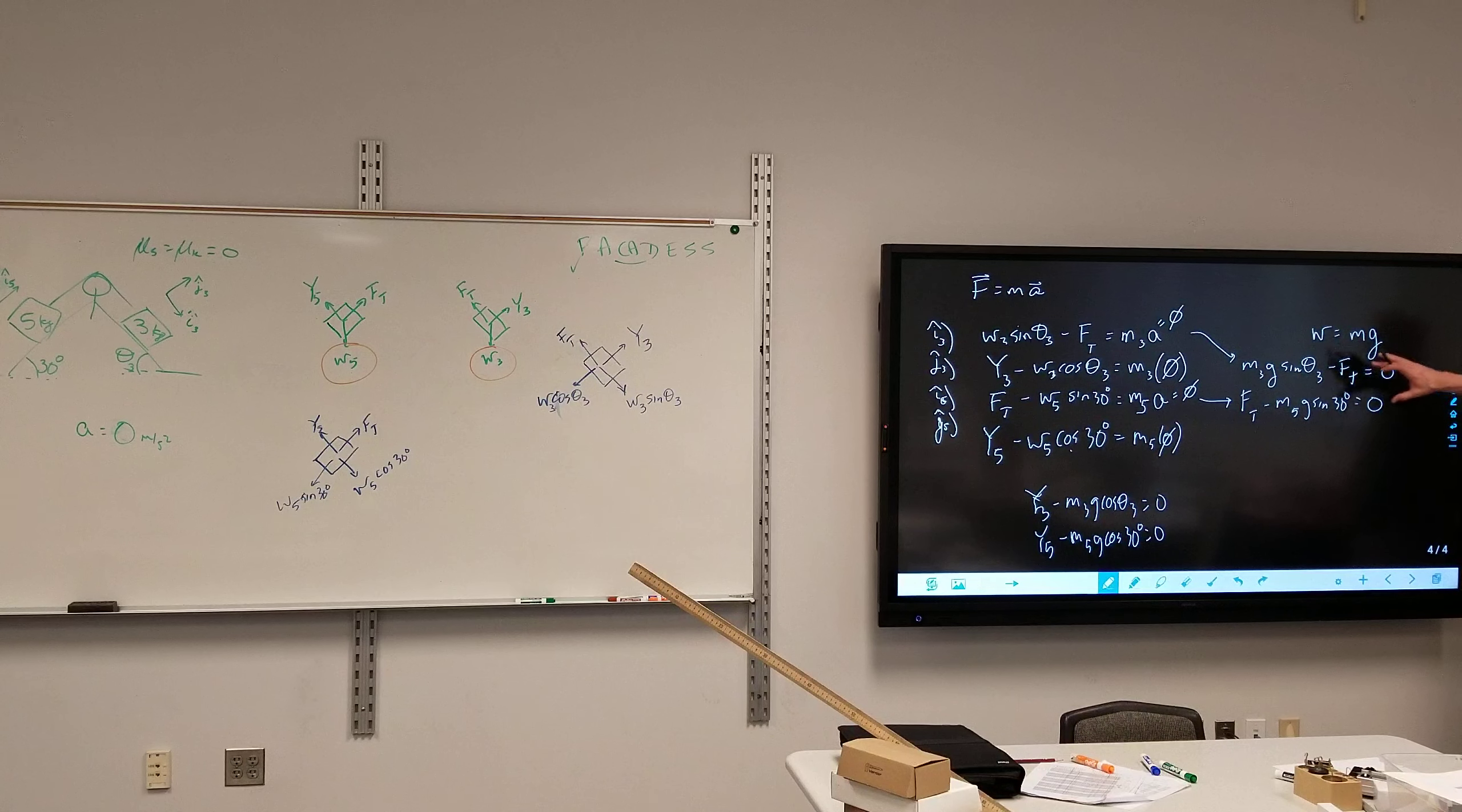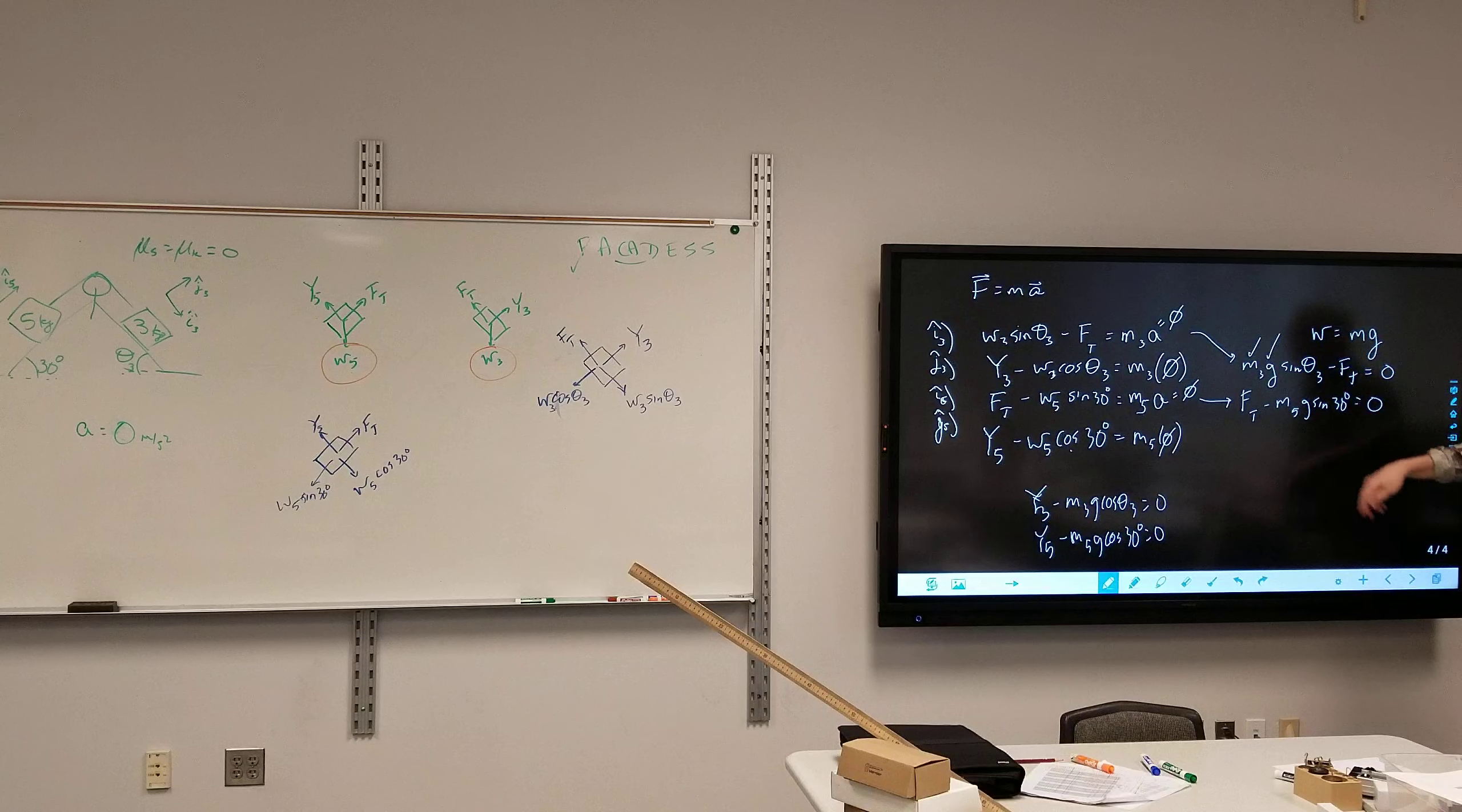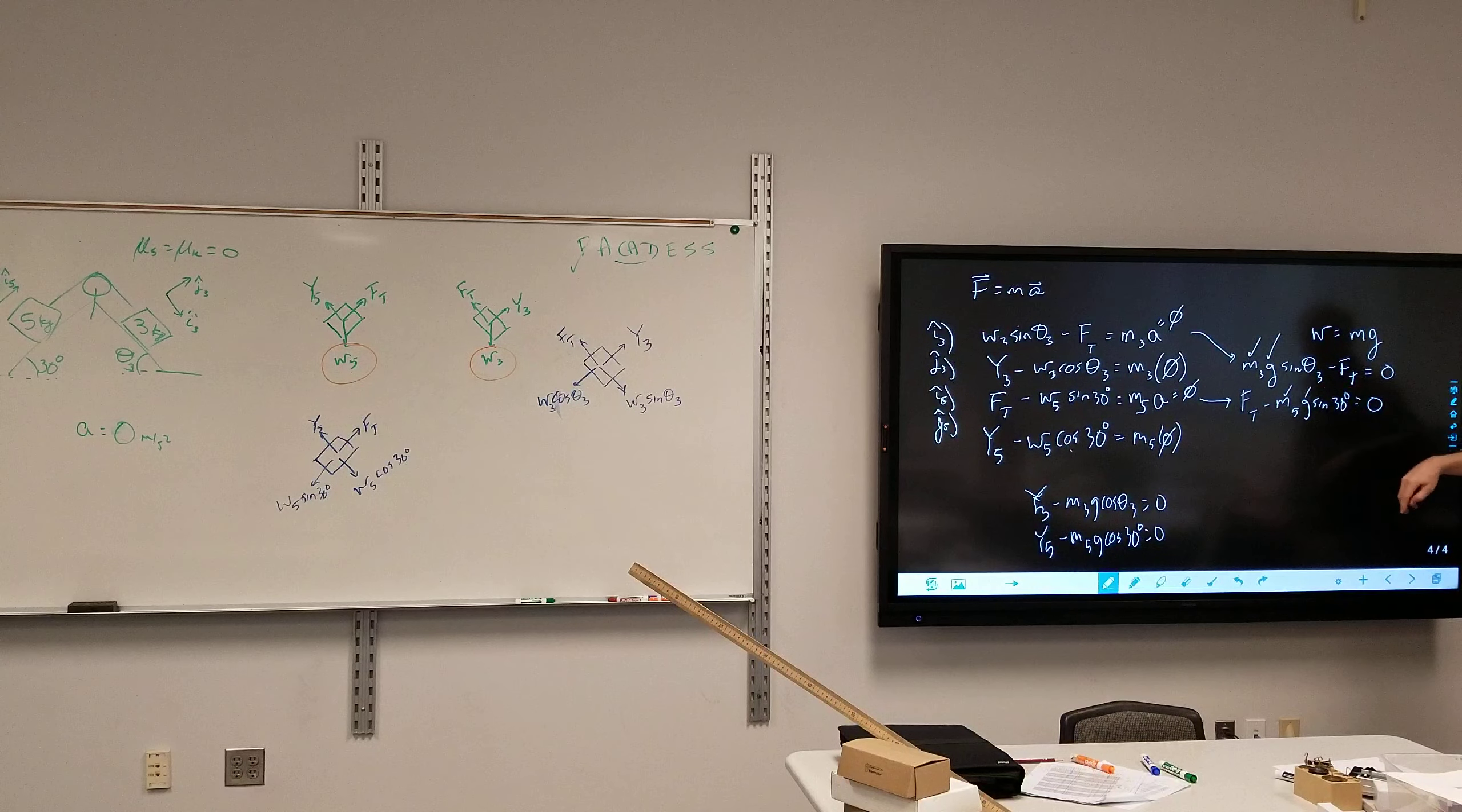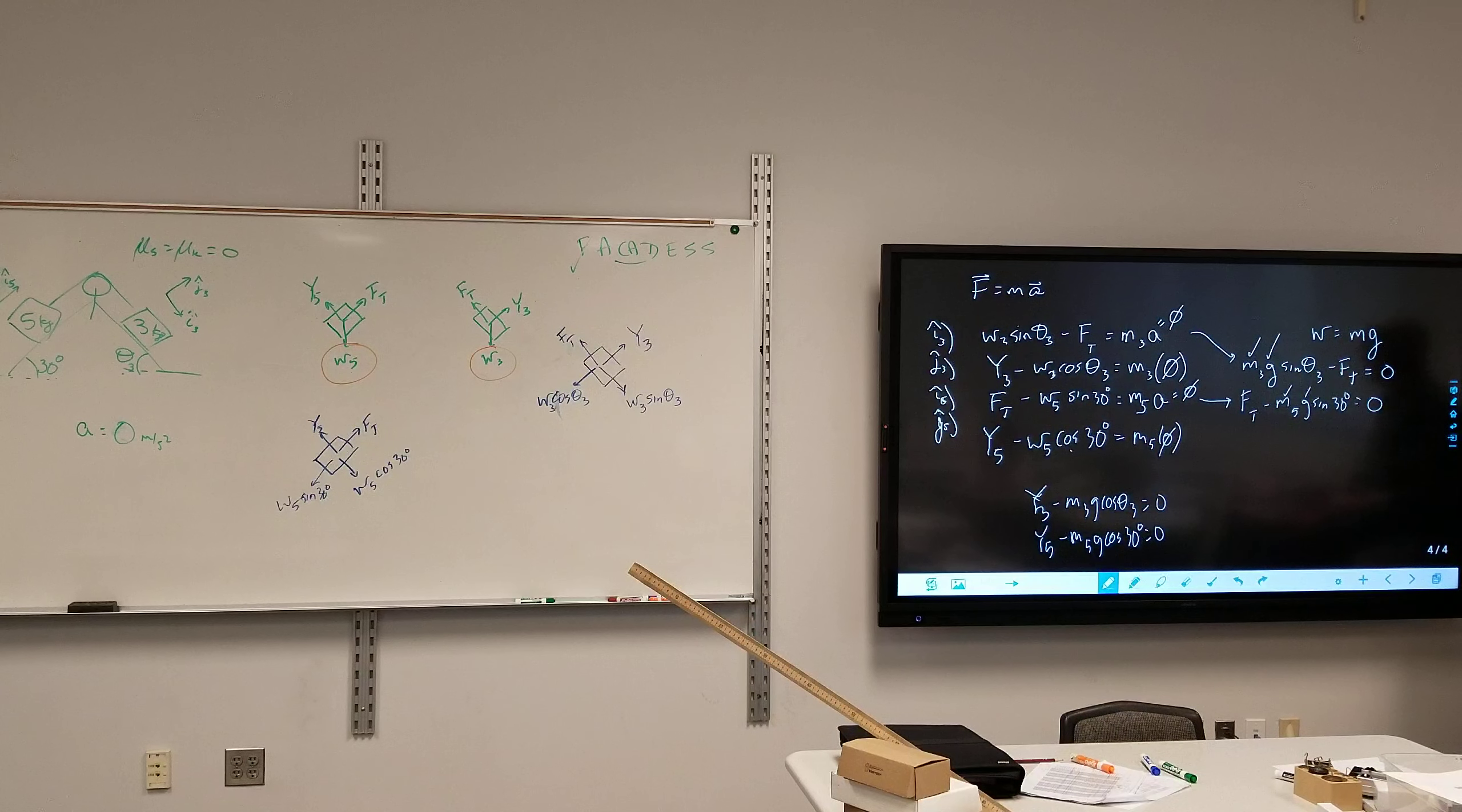I now have these two equations here. I need, I know M3, I know little g. Let's assume it takes place on Earth. I don't know tension, I don't know theta 3. But I have two equations, two unknowns. Solved.